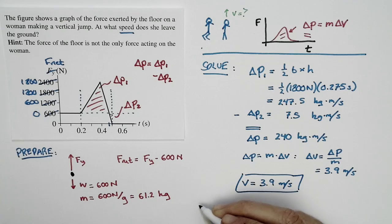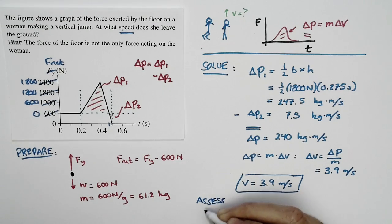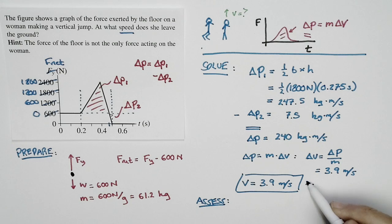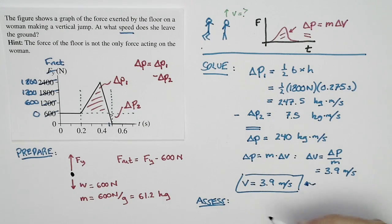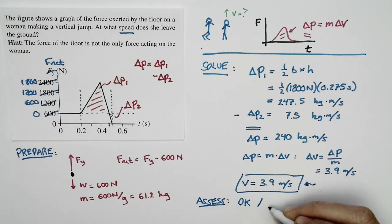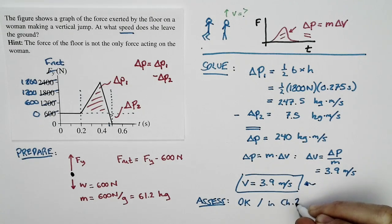Let's do a quick assessment, because that's crucial in any problem. We want to see if this makes sense. We saw problems back in chapter two of people jumping off the ground, and this result is comparable to the type of answer we got there. So our final result looks correct and consistent with what we've seen before.